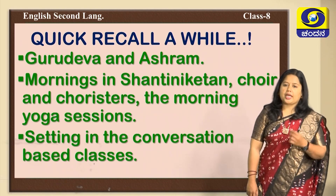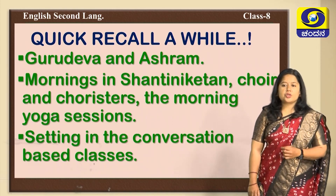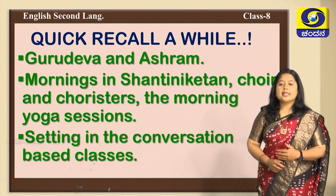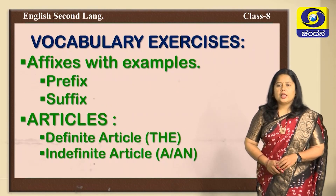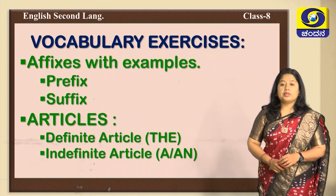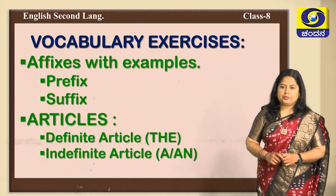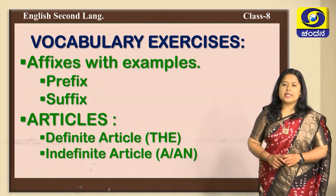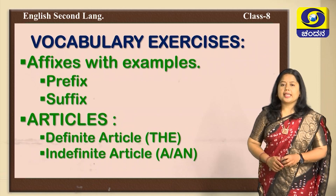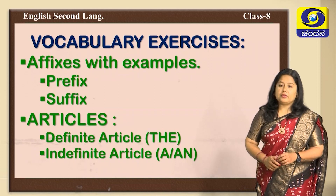The classes in the ashram were not inside the classroom but outside, and were mainly based on conversation — teachers and students used to converse with each other to discuss things more. In the exercise part, we learnt affixes — prefix and suffix — with examples, and articles — definite and indefinite. The definite article is 'the' and indefinite article is 'a' or 'an.' This is mainly what we learnt in the last class.